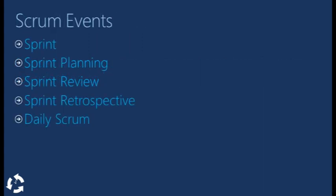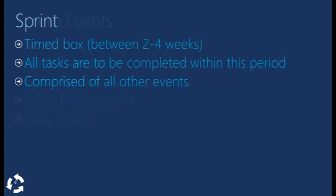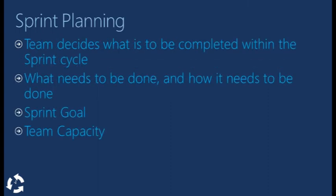Now a breakdown of the Scrum events. Sprints are periods of time between two to four weeks that contain all the following events. The sprint planning meeting is when the team decides what will be completed in that sprint, the goal and the capacity of the team.